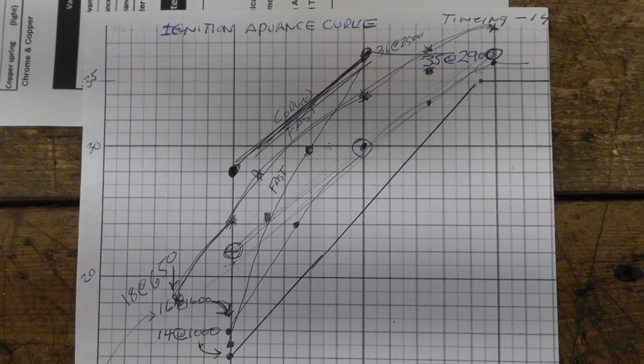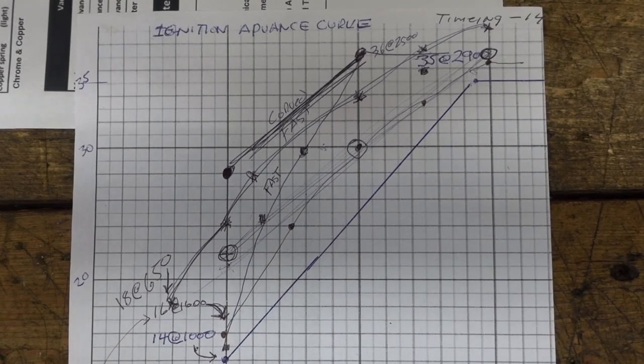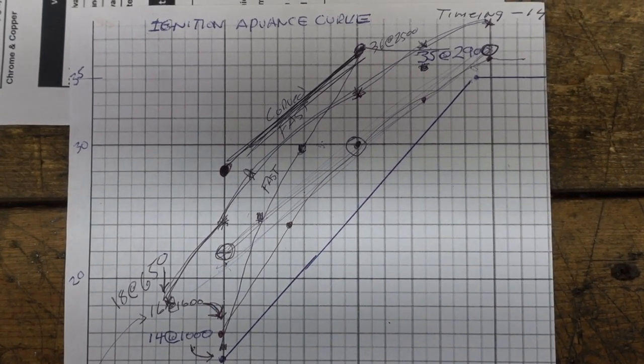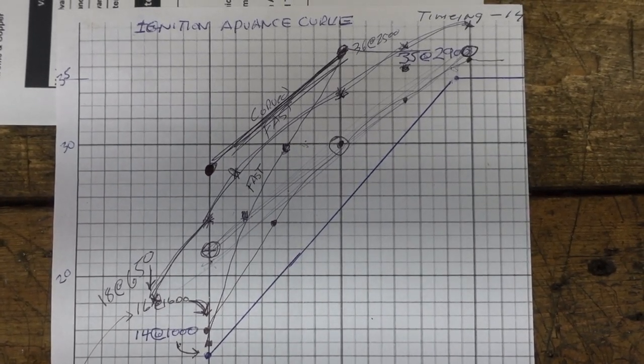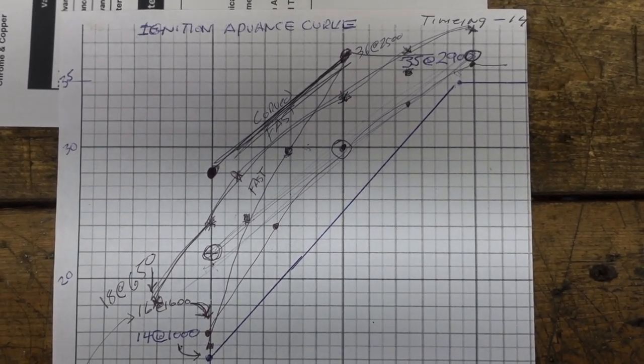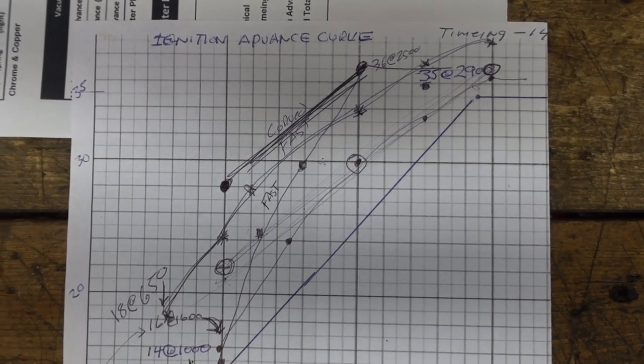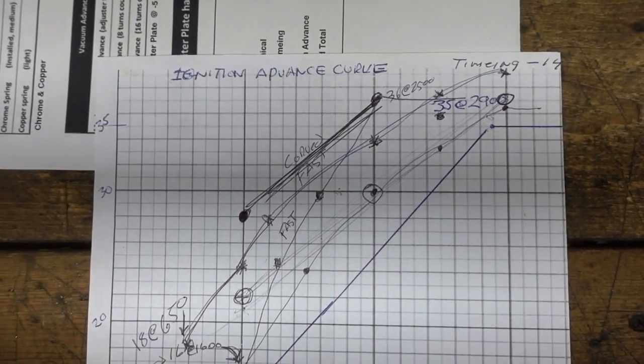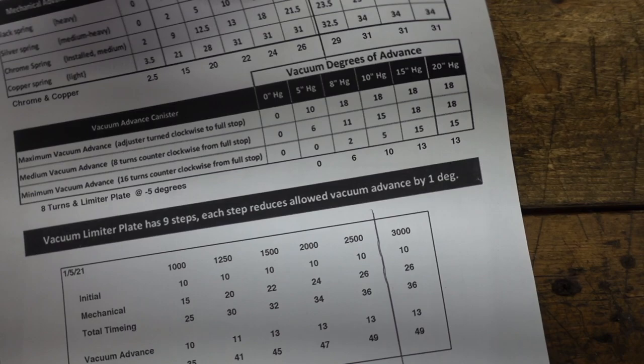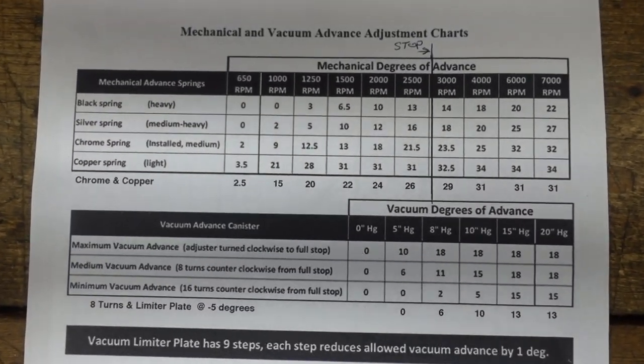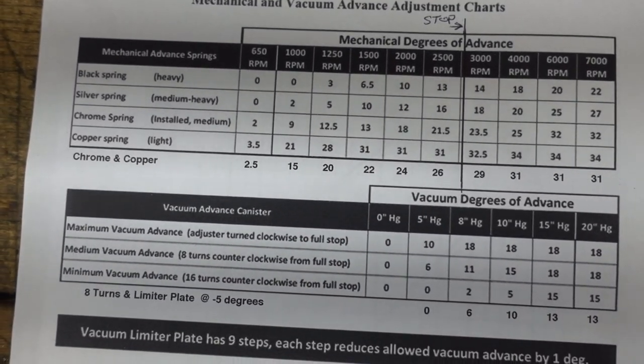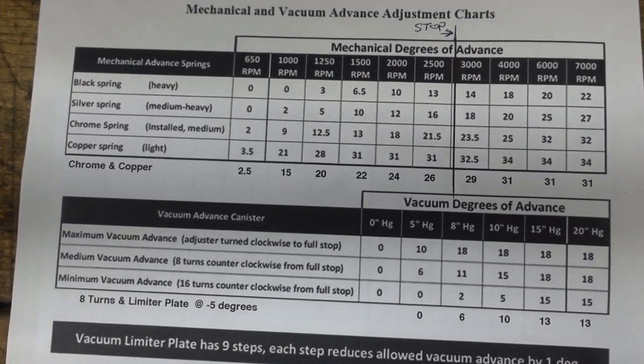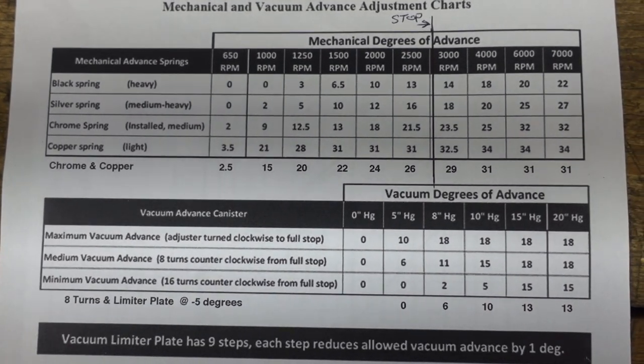And eventually you'll come up with a curve. You'll plot four or five different spots along the line until you get the total advance. And you'll see what your ignition curve is, and then you can begin to modify that. You can begin to change that. And that's what I like about that Fast HEI distributor is that distributor comes with its own sheet that shows you at different RPMs what different combinations of advance springs will give you how many degrees of advance.